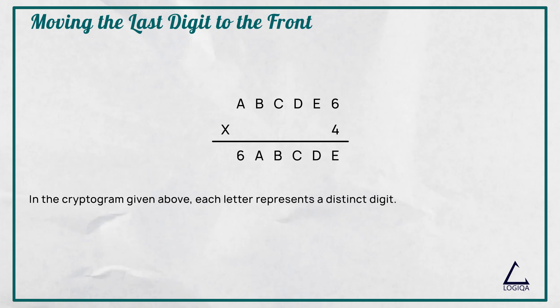The six-digit number ABCDE6 is multiplied by 4 to get the six-digit number 6ABCDE. In the cryptogram given above, each letter represents a distinct digit. Find the value of each letter such that the multiplication holds true.